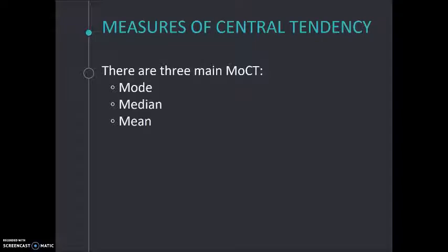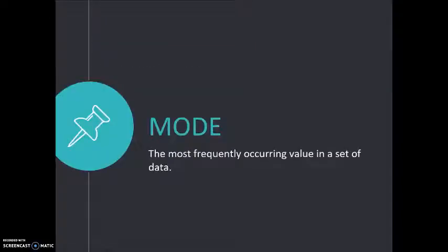So there's the mode, the median, and the mean. The mode discusses centrality in the sense of what occurs most often or what's common. So the mode is defined as the most frequently occurring value in a set of data.